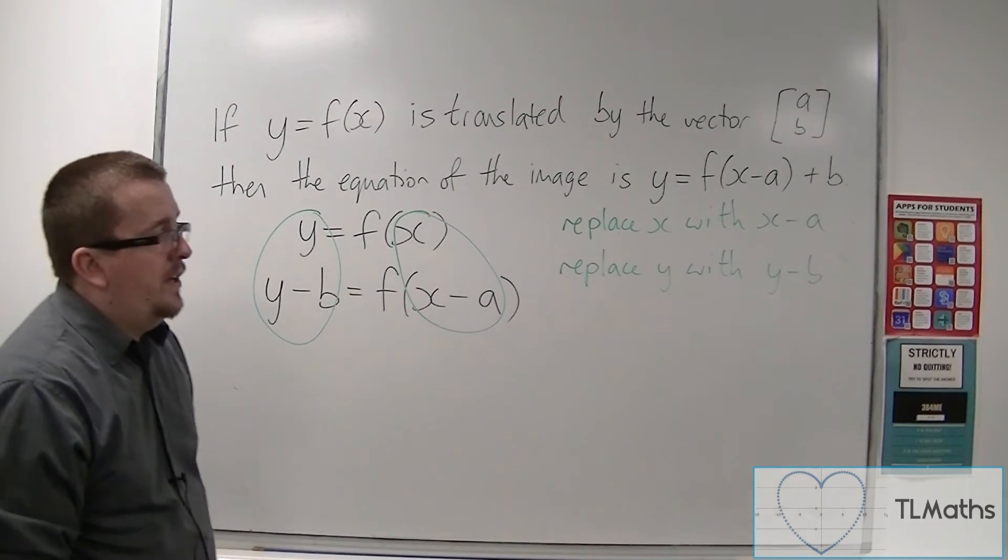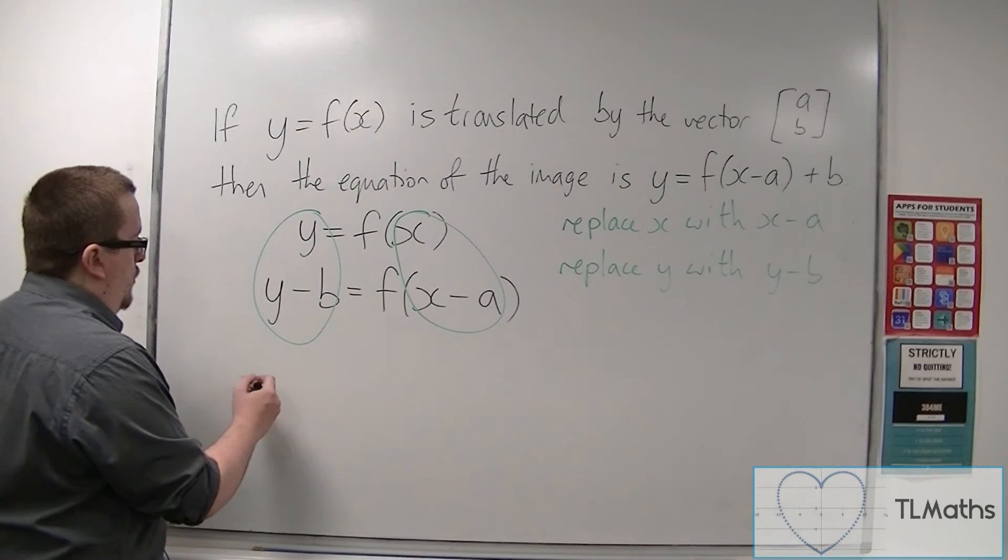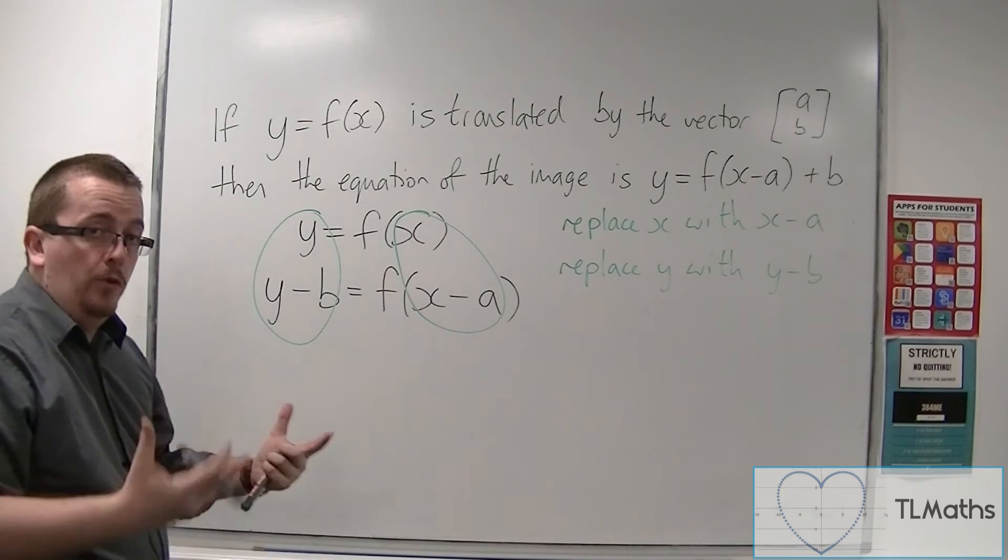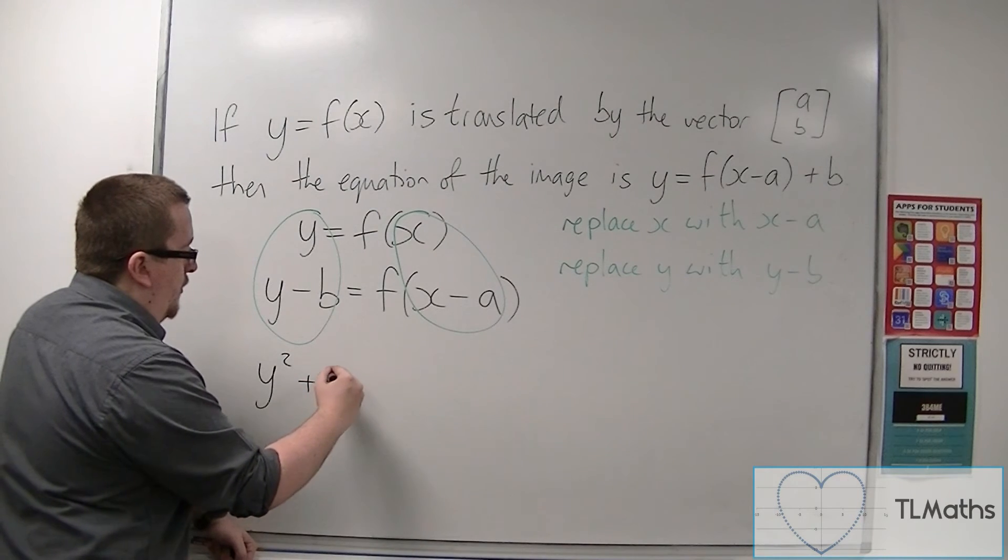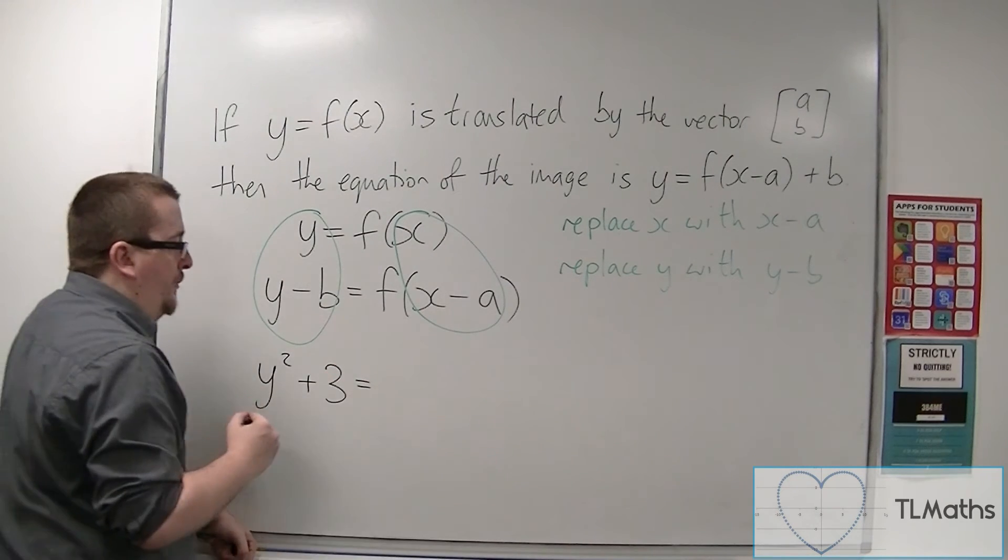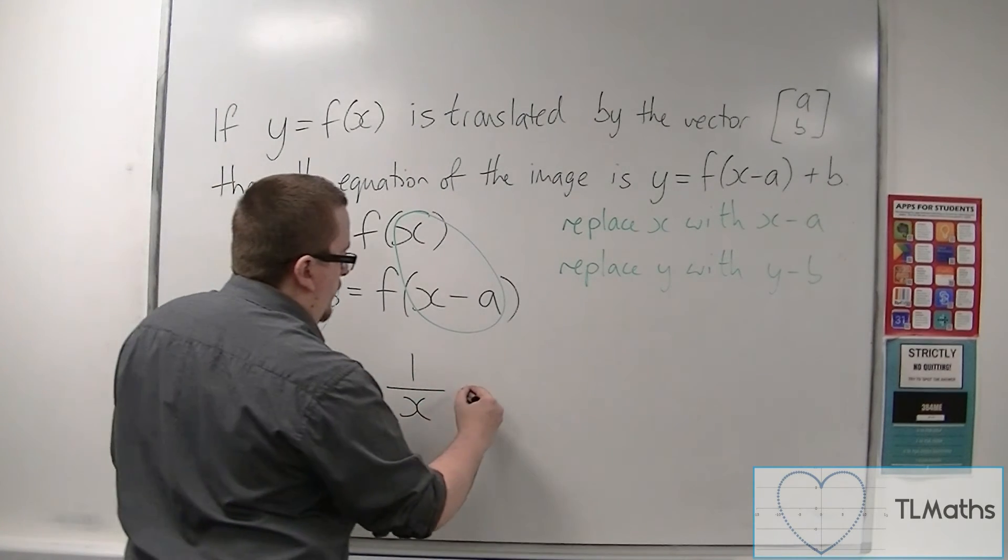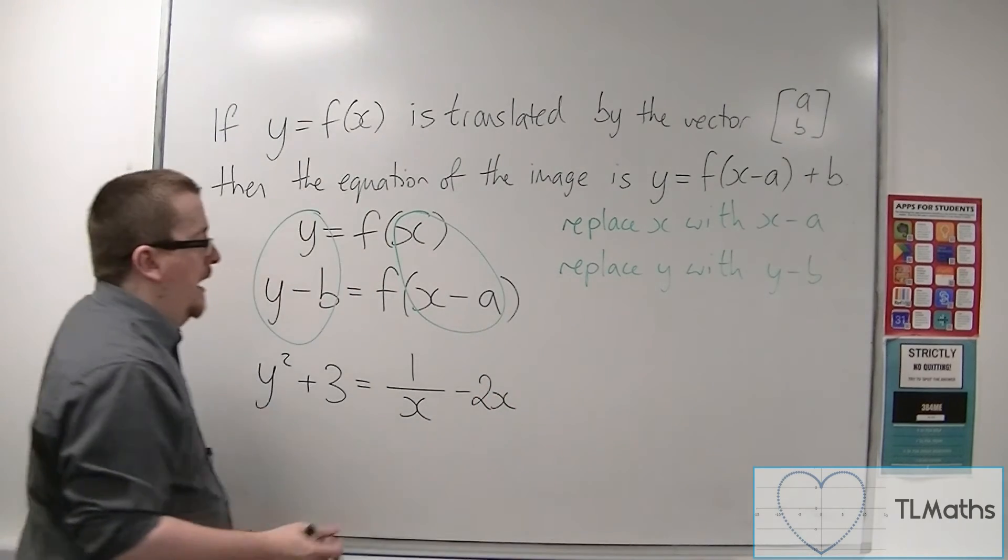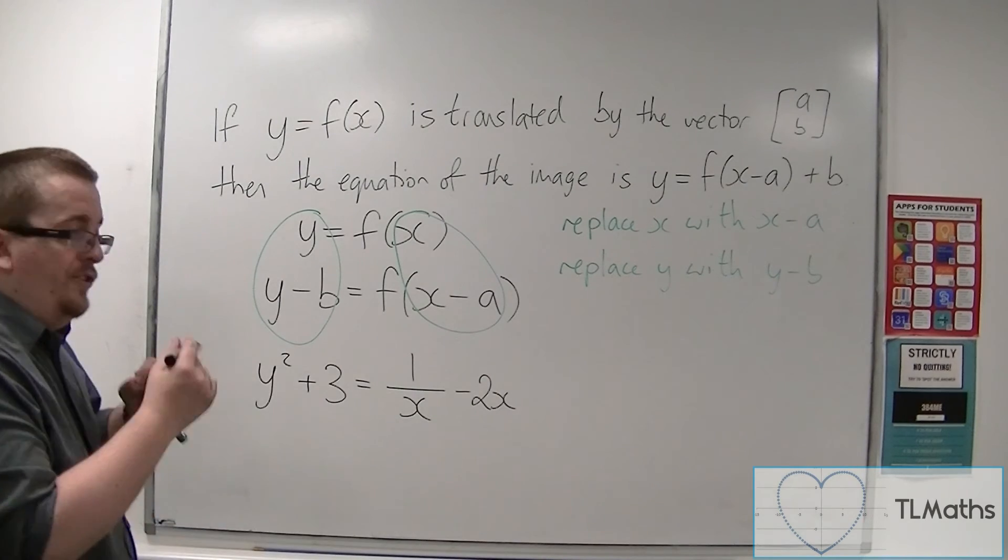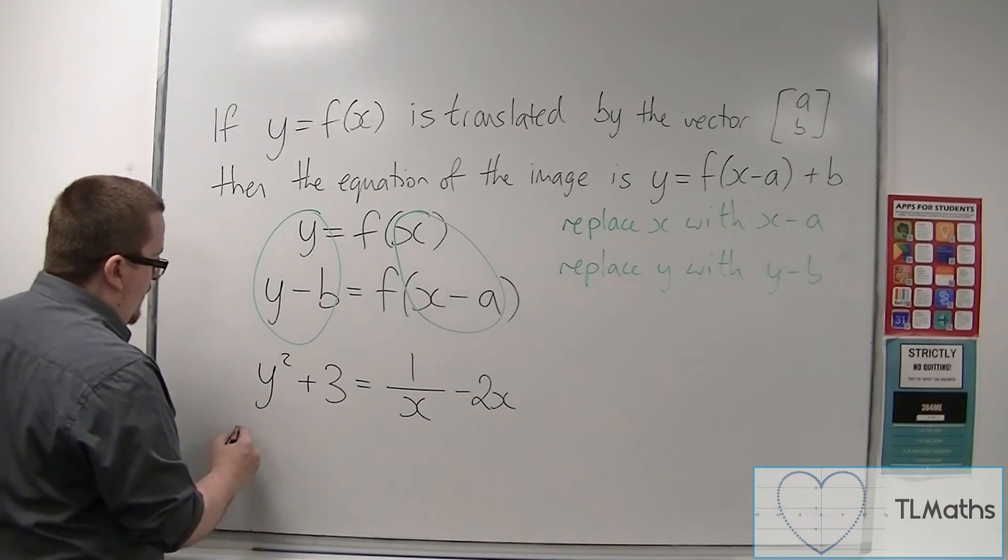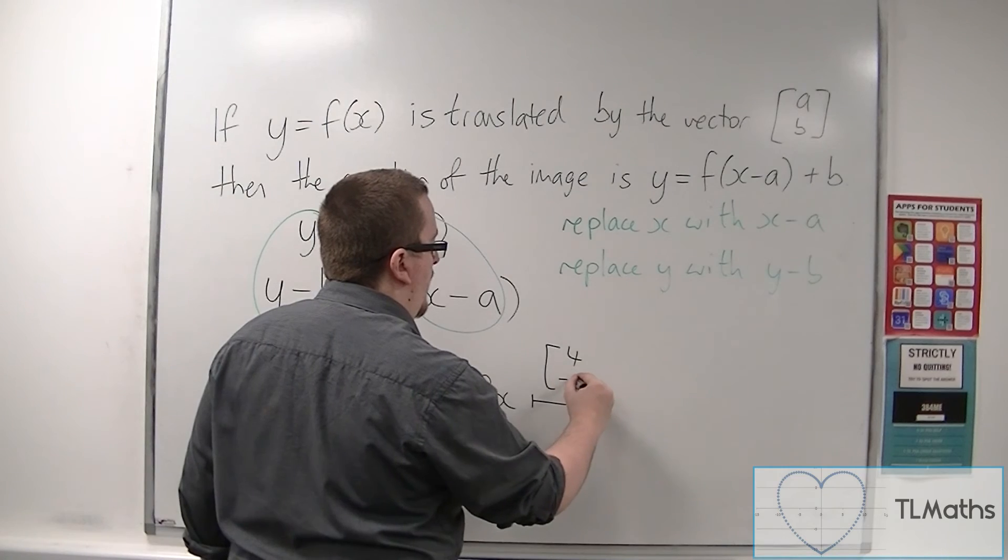So if I had some horrible looking function, definitely beyond the scope of this course, but if I had something like y squared plus 3 equals 1 over x take away 2x, and this was the curve that I was looking at, and I wanted to translate it by the vector, well, let's say (4, -2),